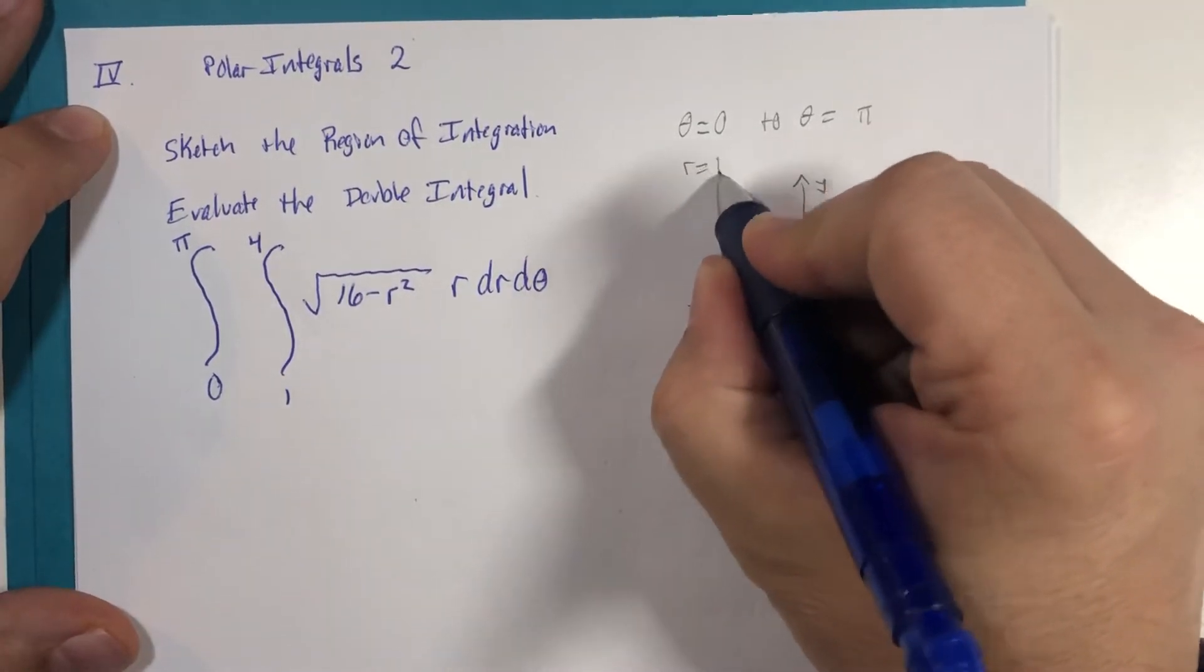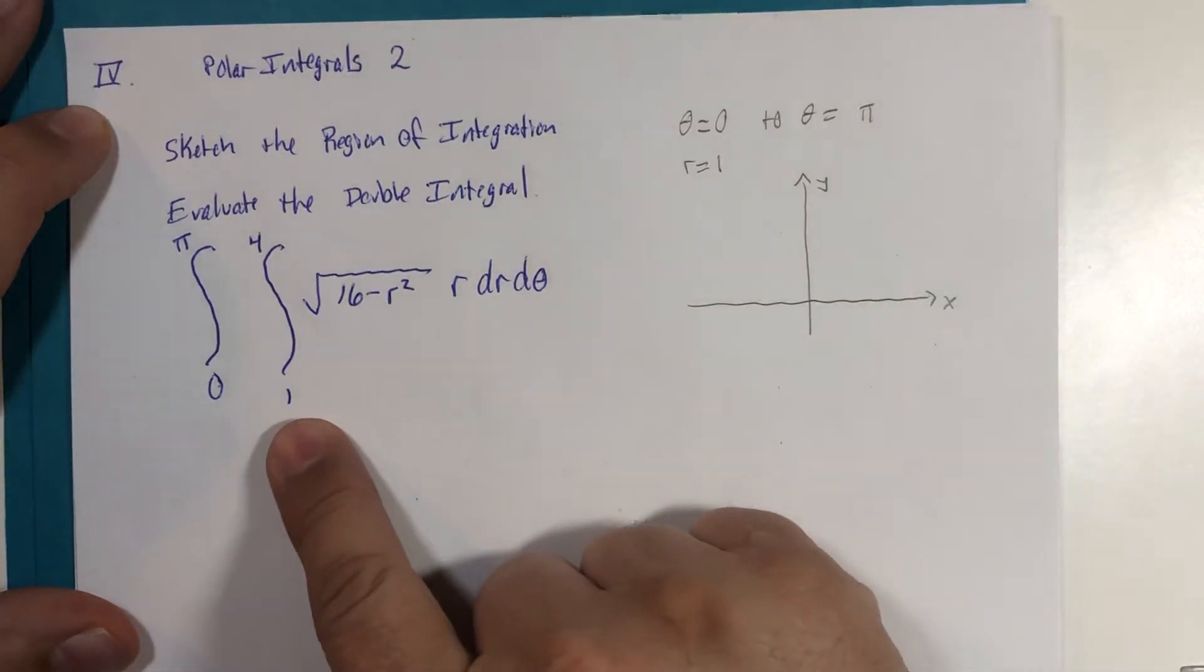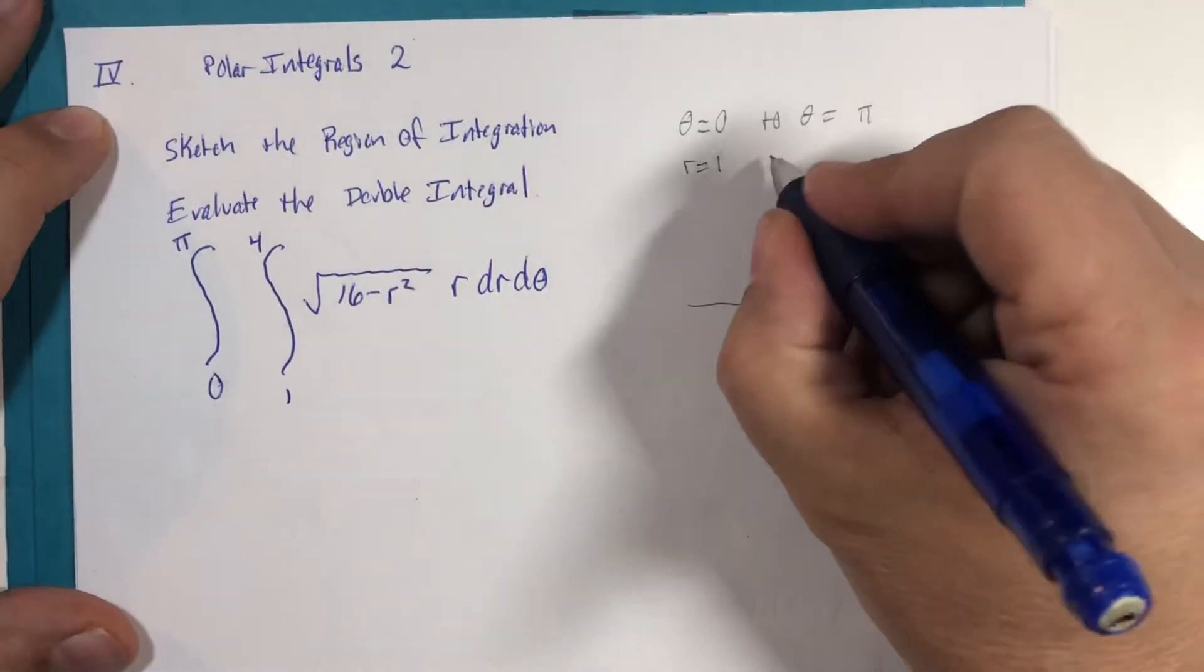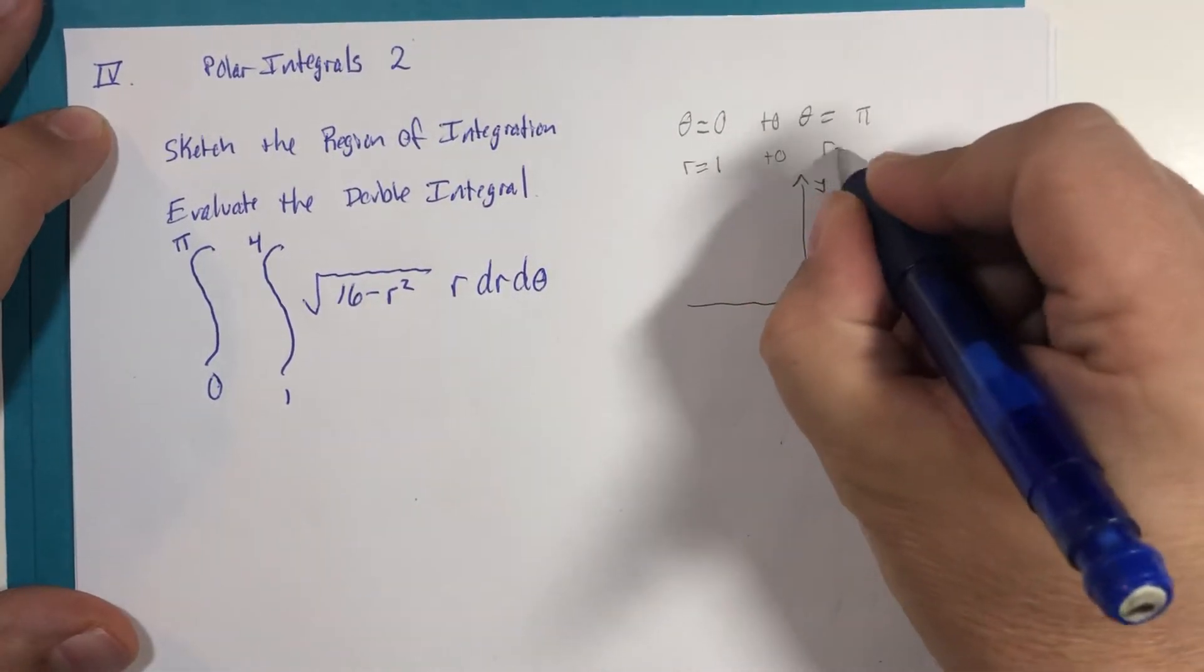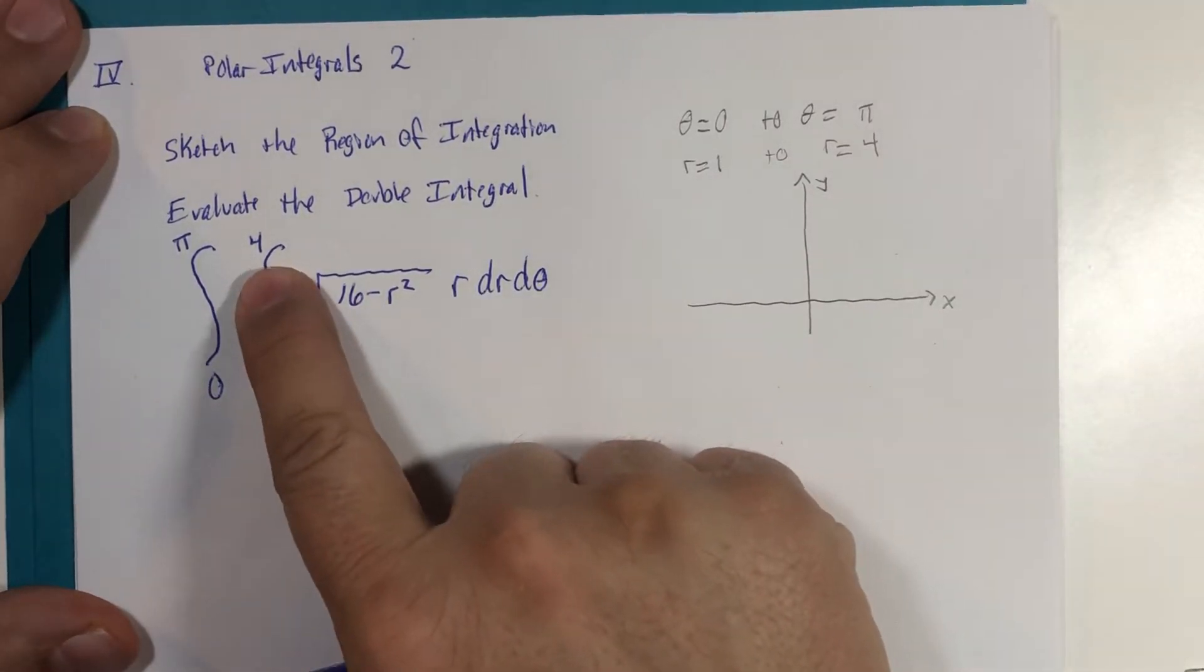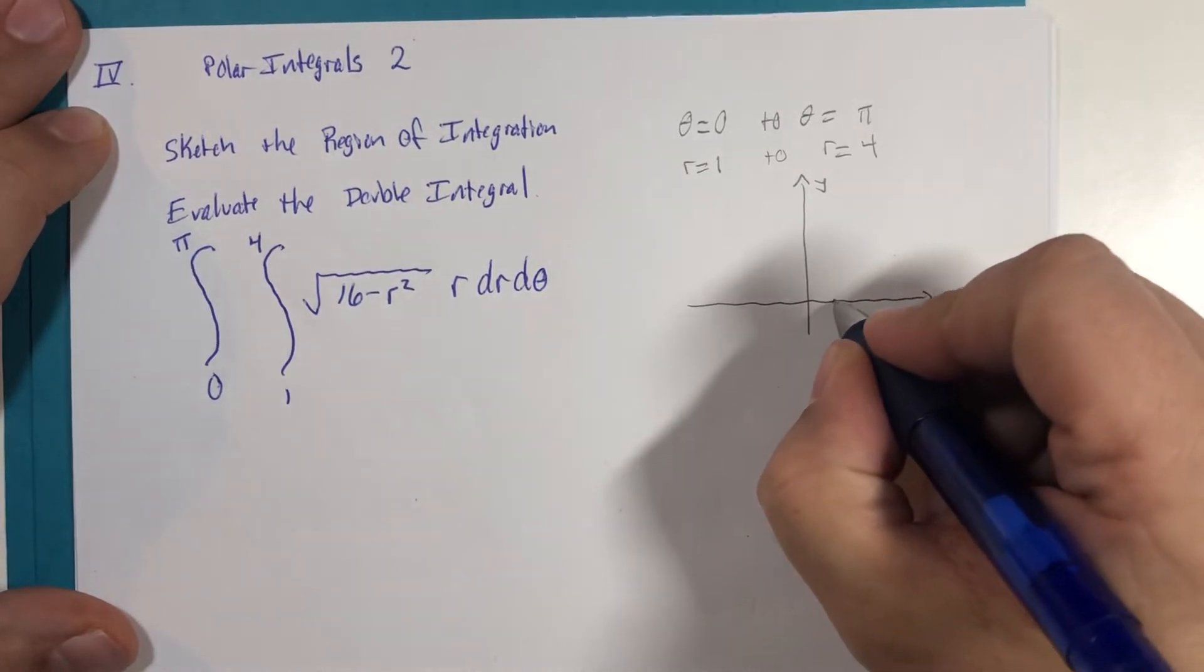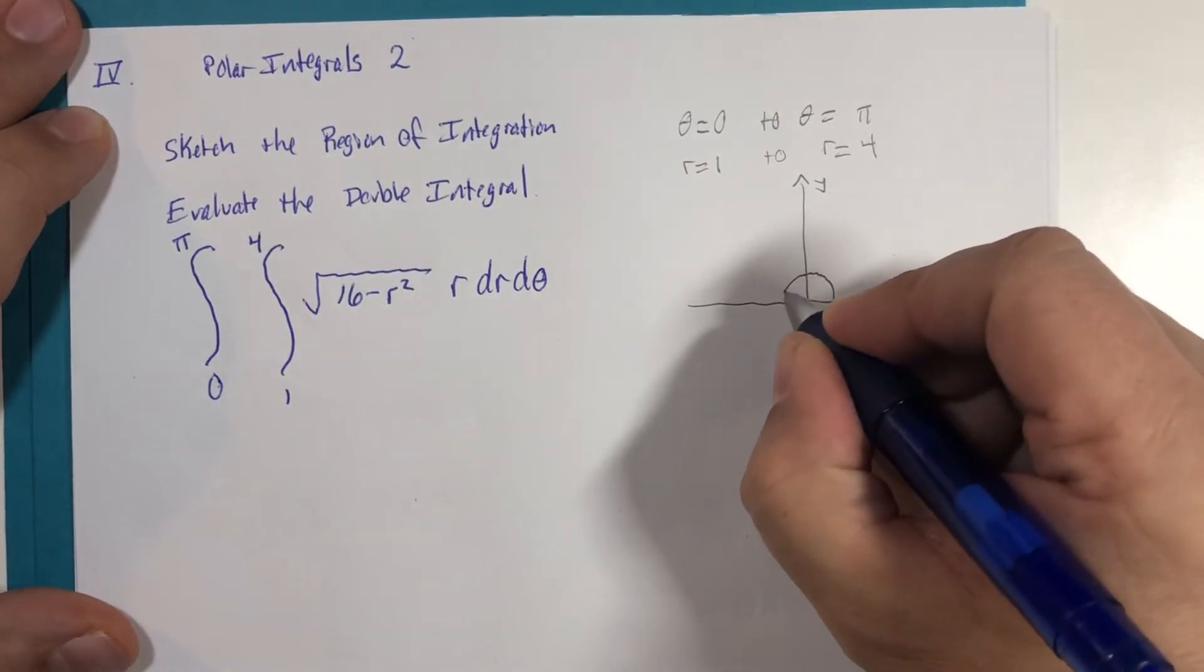r goes from one—let's just pause for a moment what that means—that's referring to a circle of radius one in the polar world, and out to r equals four, which is a circle of radius four in the polar world.